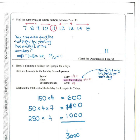Question 5 asks you to find a number exactly halfway between 7 and 15. The most straightforward way is to write out the numbers from 7 to 15 and just count in — 4 numbers on each side, so 11 is plainly in the middle. If the numbers were more complicated, say decimals or negatives, find the average: add them together to get 22 and divide by 2 to get 11.